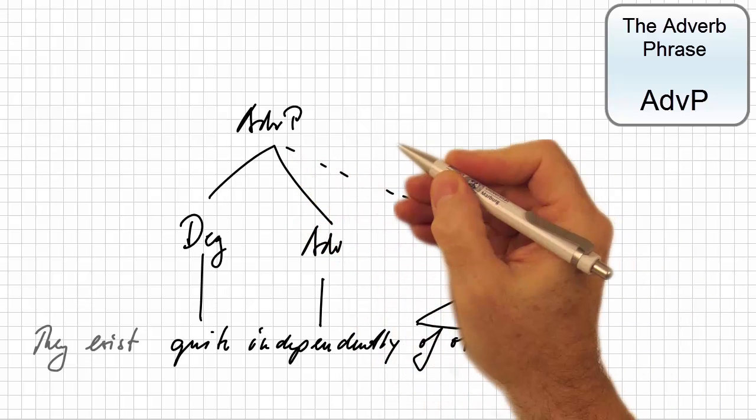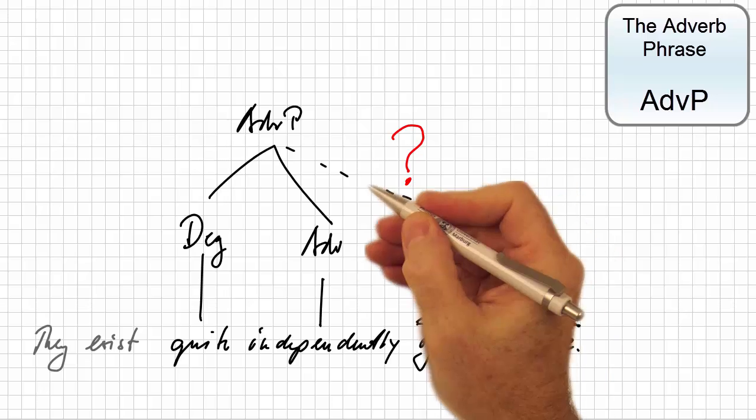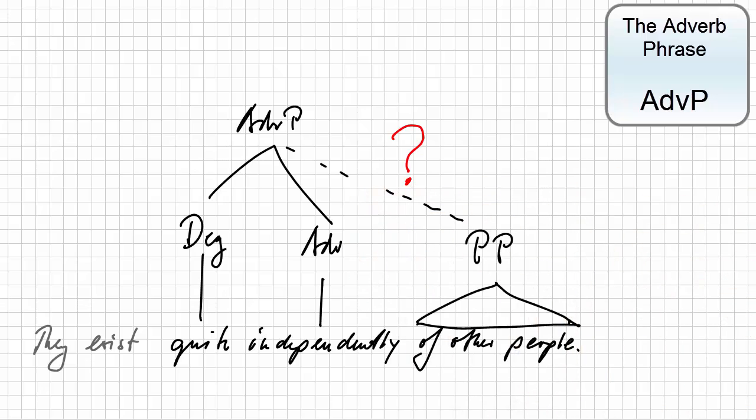Which node is the prepositional phrase's mother node? Clearly, the prepositional phrase must form a constituent with independently.